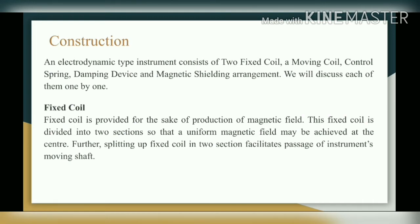Construction: an electrodynamic type instrument consists of two fixed coils and a moving coil, a control spring, a damping device, and a magnetic shielding arrangement. The fixed coil is provided for the production of a magnetic field. It is divided into two sections so that a uniform magnetic field may be achieved at the center, and splitting it facilitates passage of the instrument's moving shaft. In the middle of the fixed coil, the moving coil is placed.